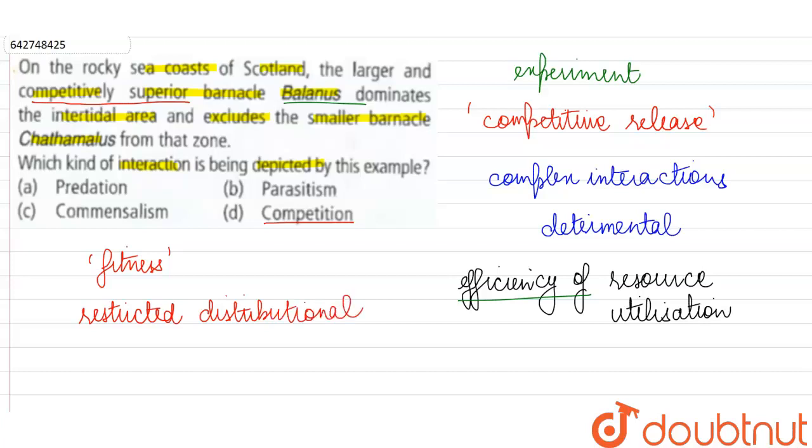So the species which is competitively superior will reduce the distributional range of the inferior species. In competitive release, if the superior species is removed from a particular area or habitat, then suddenly the competitively inferior species whose geographical distribution was limited or restricted because of the other species - suddenly its distributional range becomes wider and it is found in a larger area.